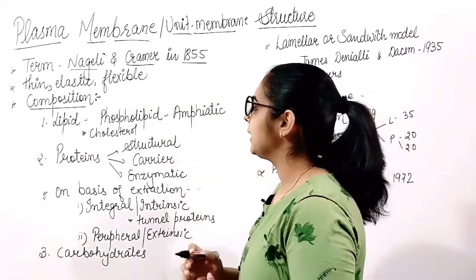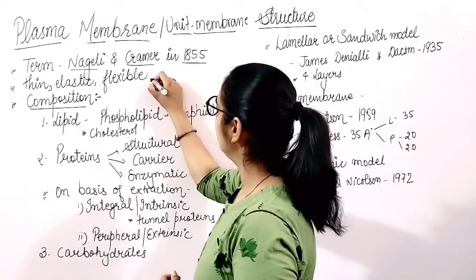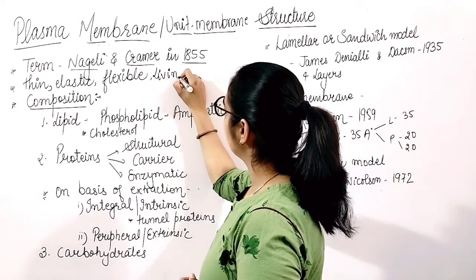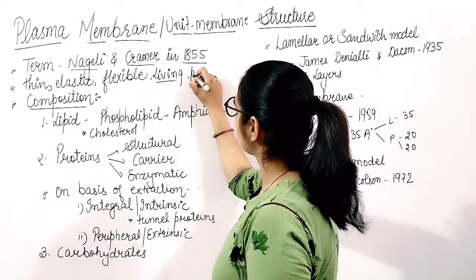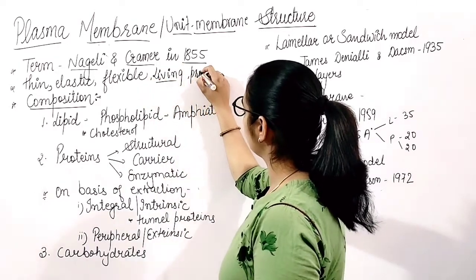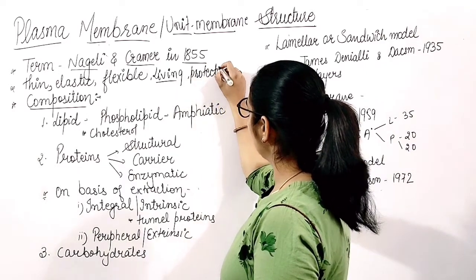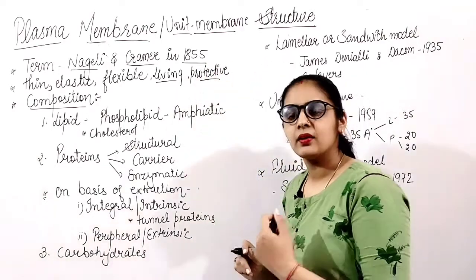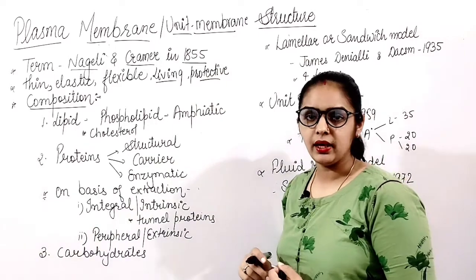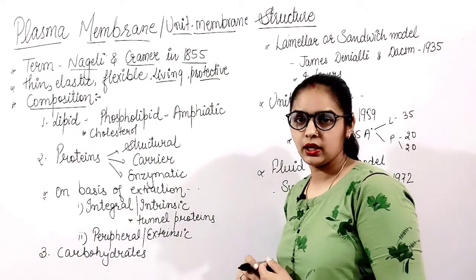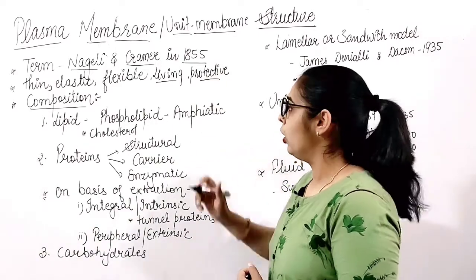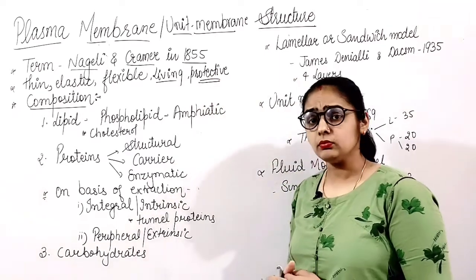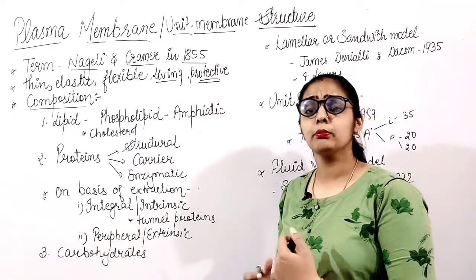Plasma membrane is a living, thin, elastic, flexible, and protective membrane. It protects the cell contents and also provides the shape of the cell.